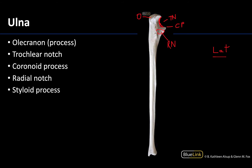Again there is the radial notch for articulation with the periphery of the head of the radius — quite a bit going on in this proximal portion. The shaft of the ulna then gets progressively smaller and thinner, with a slight increase in size at the distal end. This is the head of the ulna, and there is a styloid process associated with it, facing posteriorly on the same side as the olecranon.